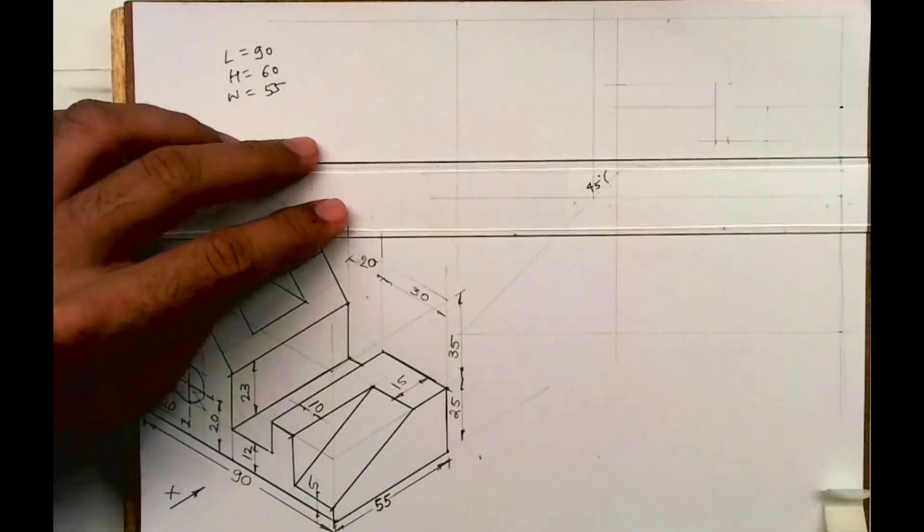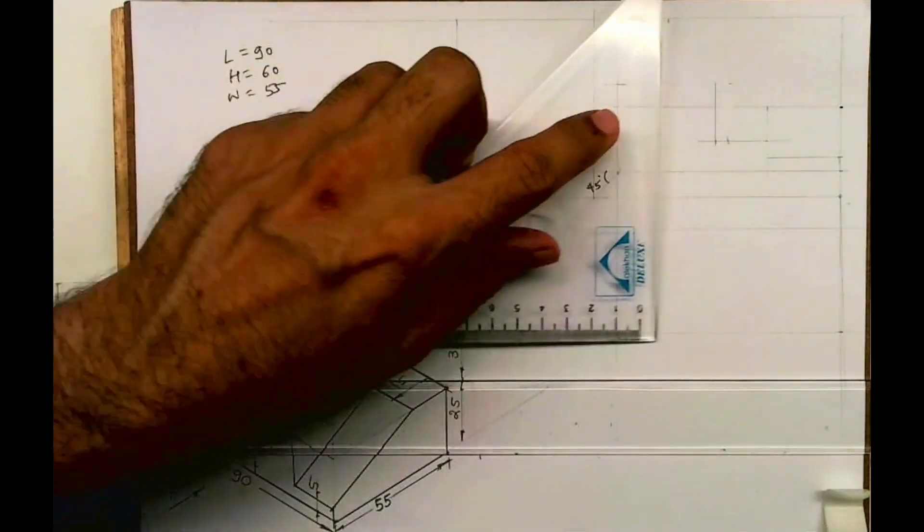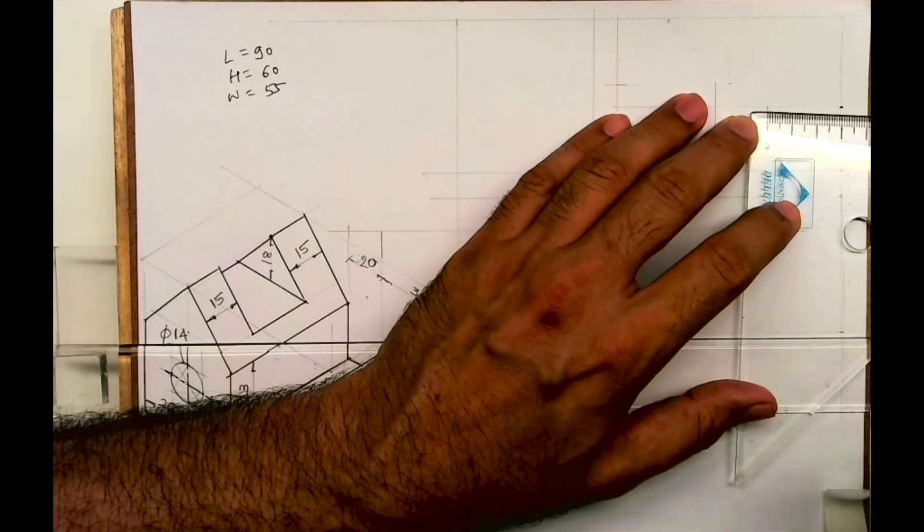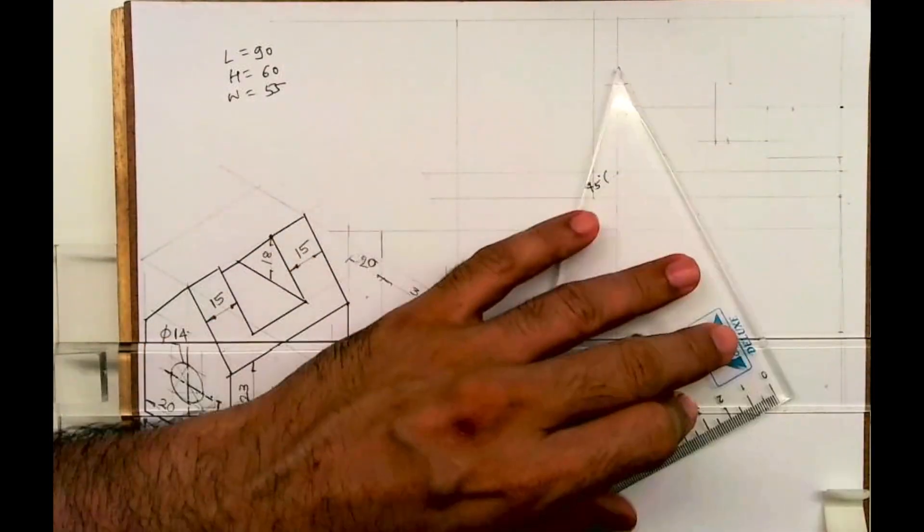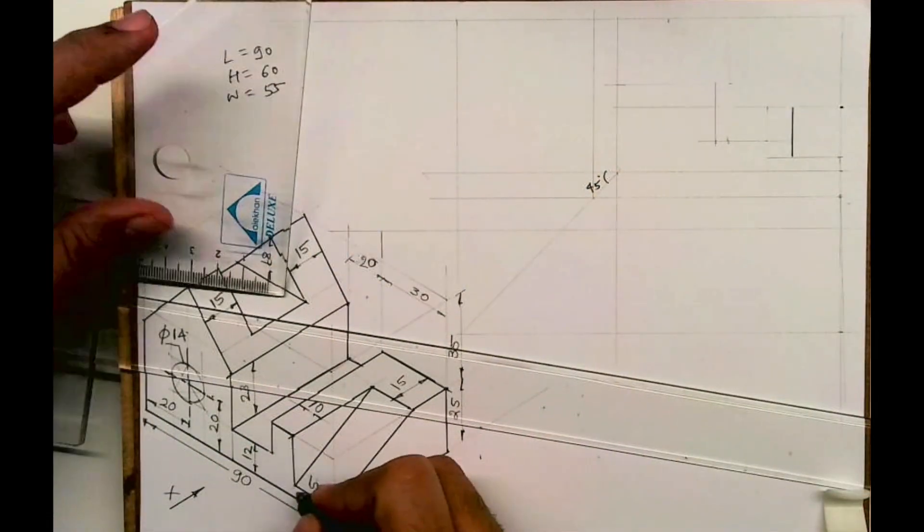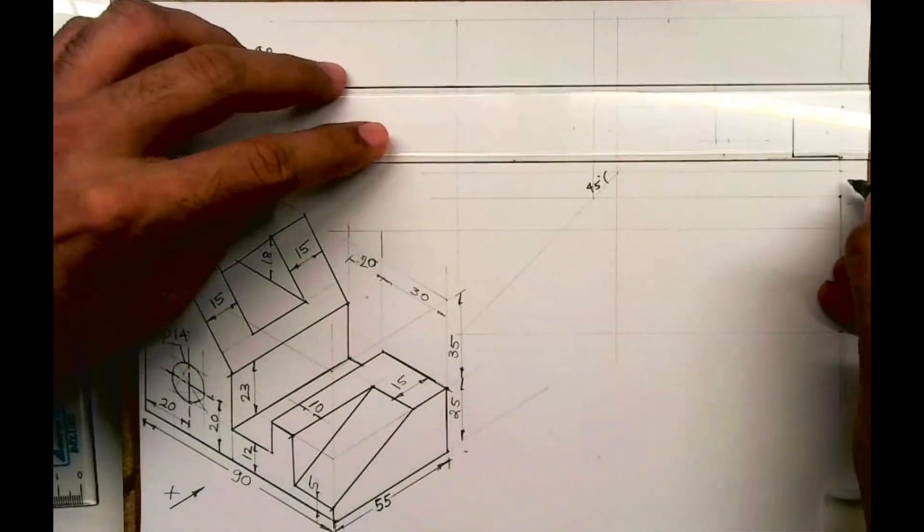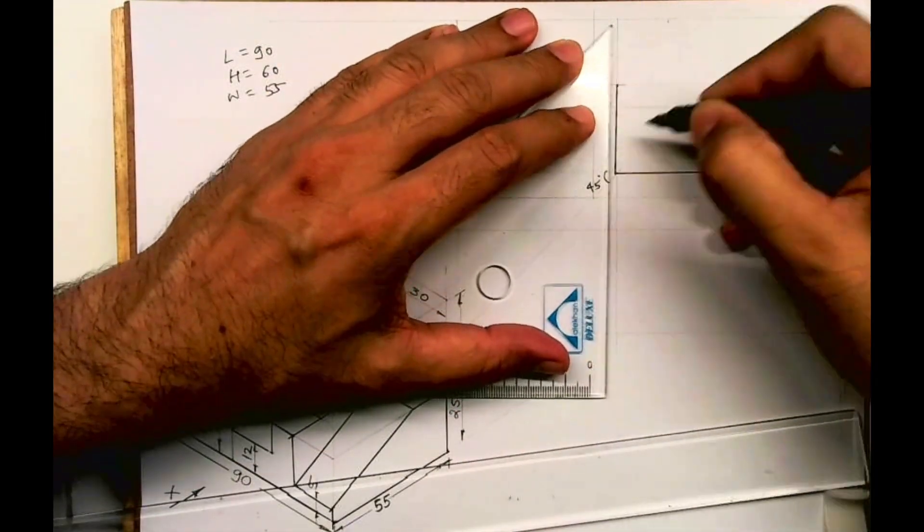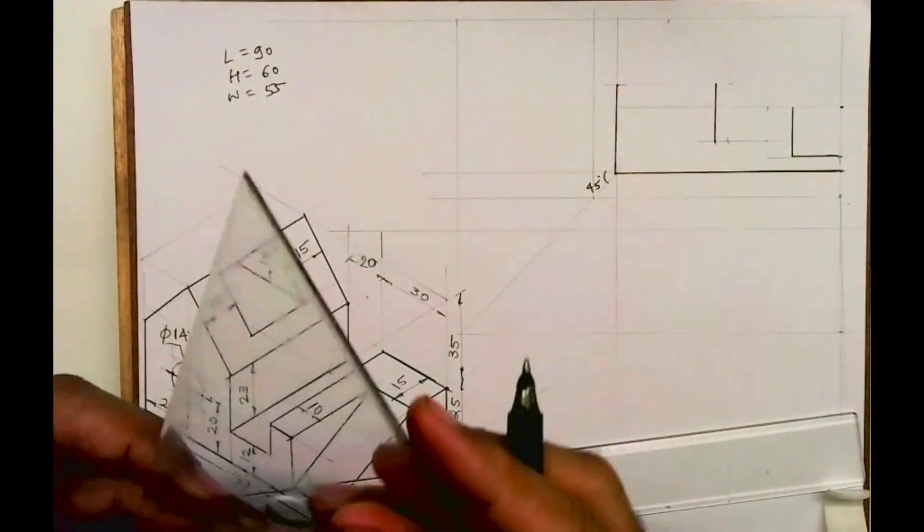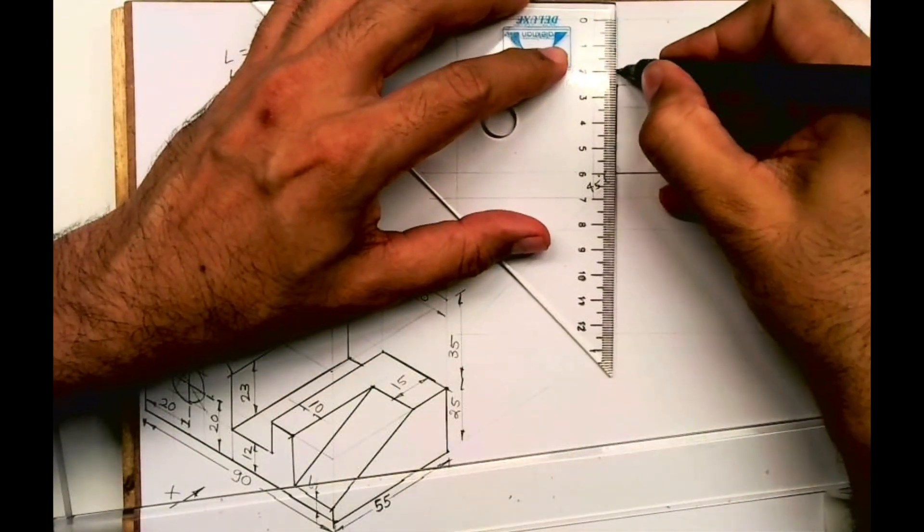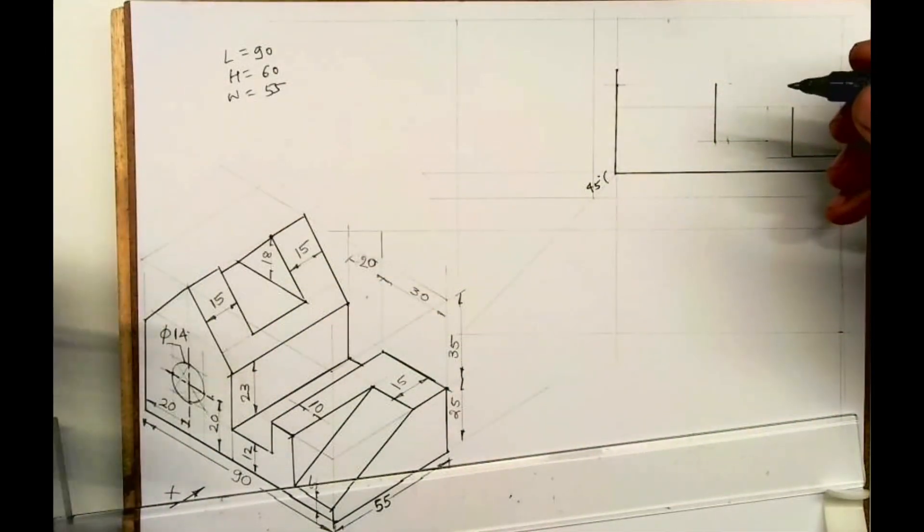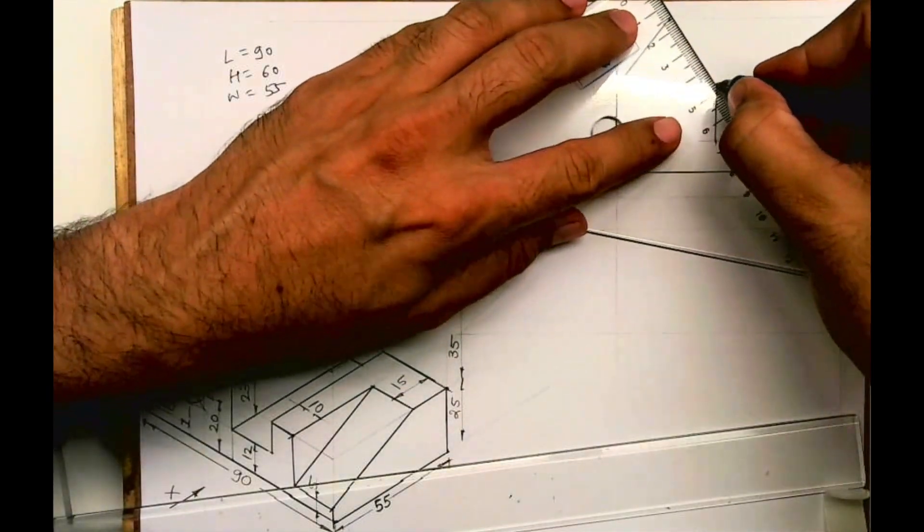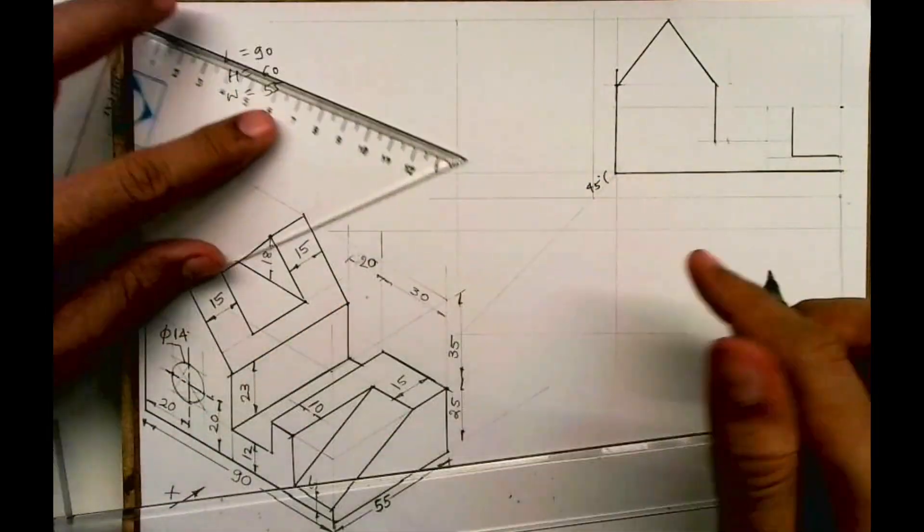I'll just take this as 5, draw a line, and this is 10. Here's a vertical line as well as here. The height of that is 23 from 12, so 35 from bottom. You join this, take 20 from top, and you can draw this.